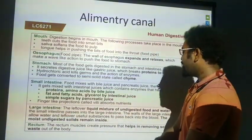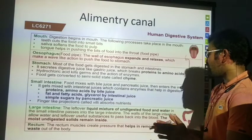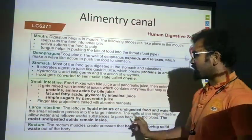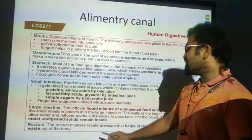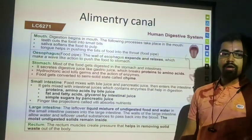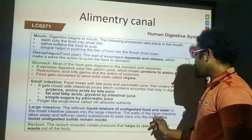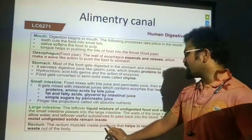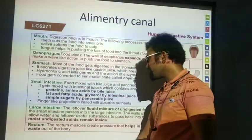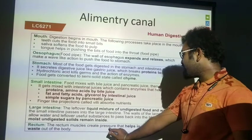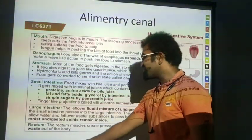The leftover mixture of undigested food and water from the small intestine is passed into the large intestine. The walls of the large intestine allow water and leftover usable substances to pass back into the blood. The moist undigested solids move to the rectum, where the rectum muscles create pressure to help remove the solid waste as excretion.